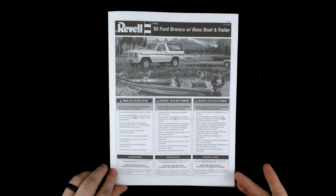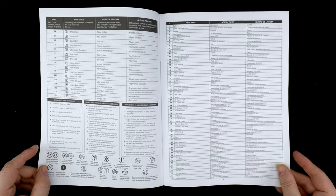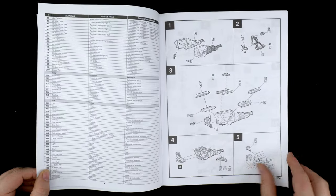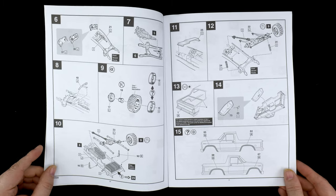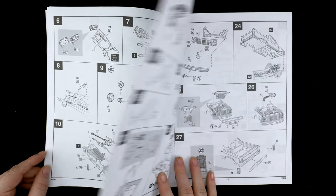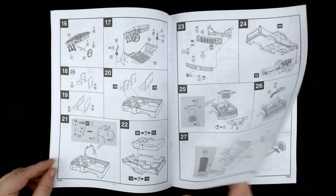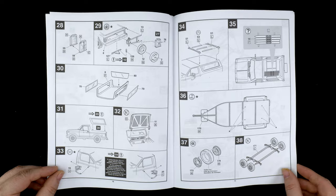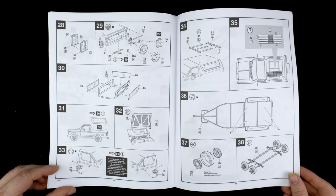Now we're going to take a look at the instruction book. So that's what those pieces were. They were for the roof rack. Step 34. That makes sense.